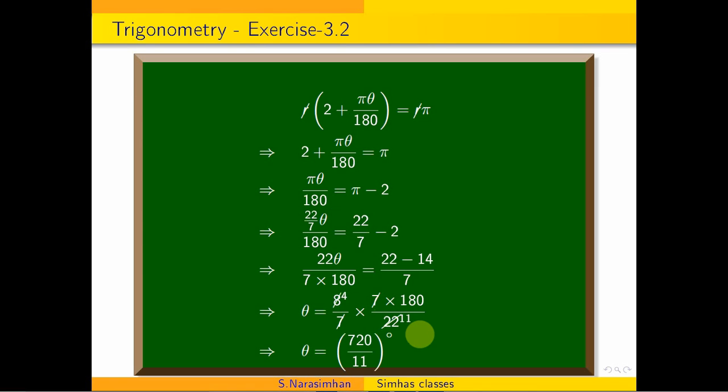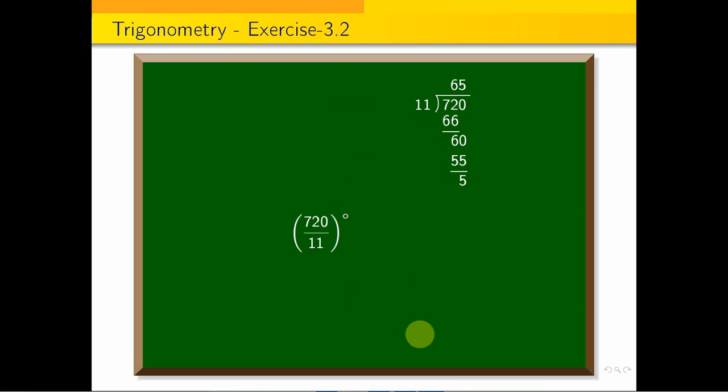So 11 divides into 720, which gives 65 with a remainder of 5. So it's 65 and 5/11 degrees. Now, to convert 5/11 degrees...